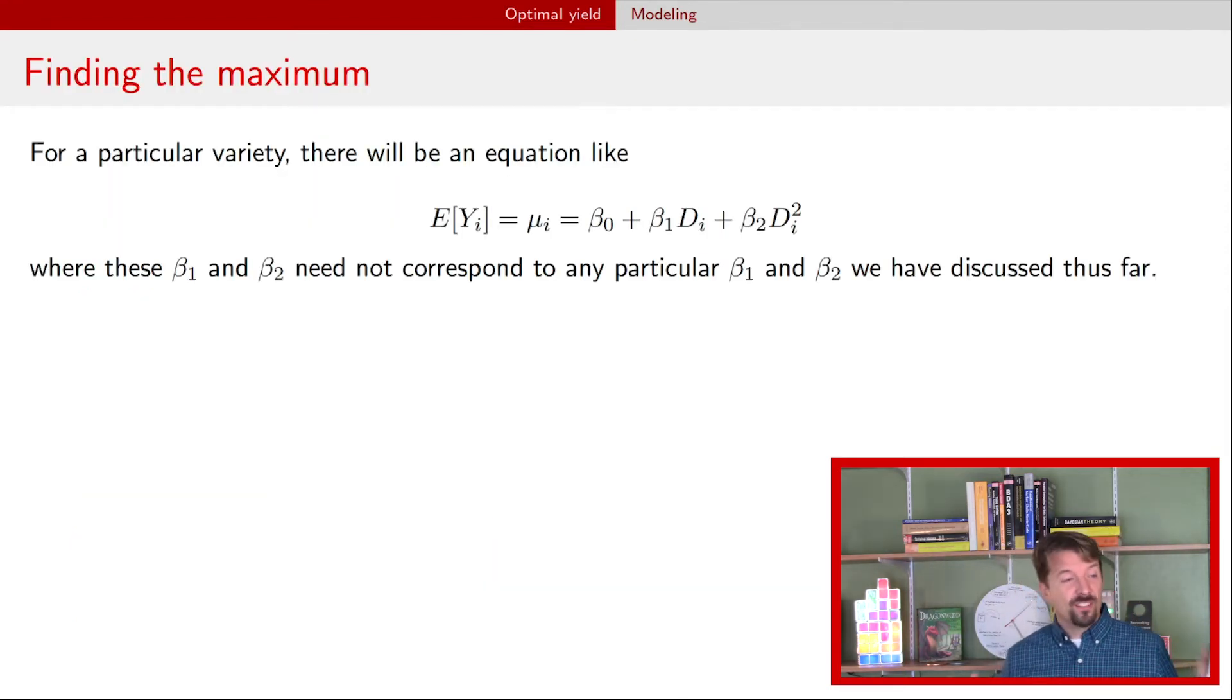Alright so now that's fine and dandy but how do you find the maximum? So here is the equation that allows you to find the maximum in terms of density in all these models, even the one with interaction. You have a quadratic curve for density and so the question now to you is how can you find the value for density that maximizes the expected yield?